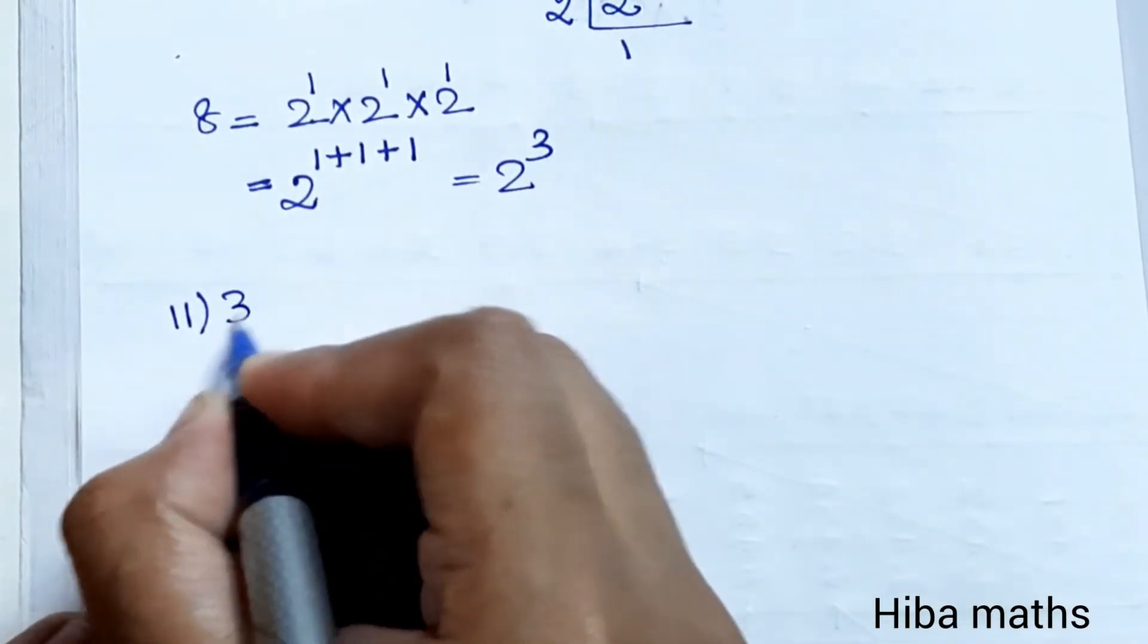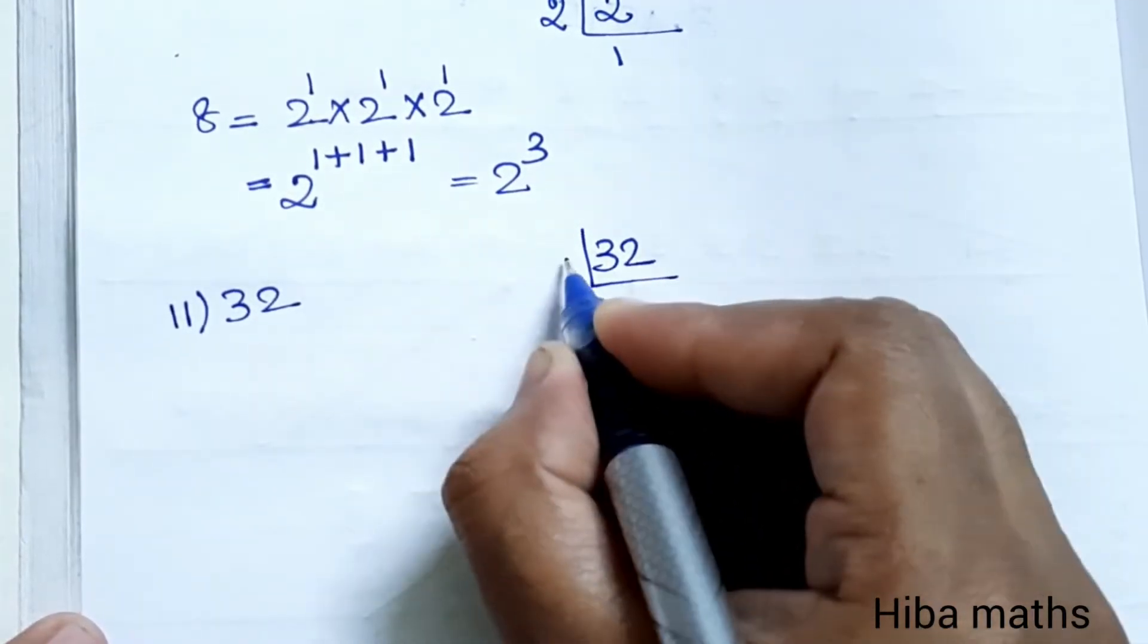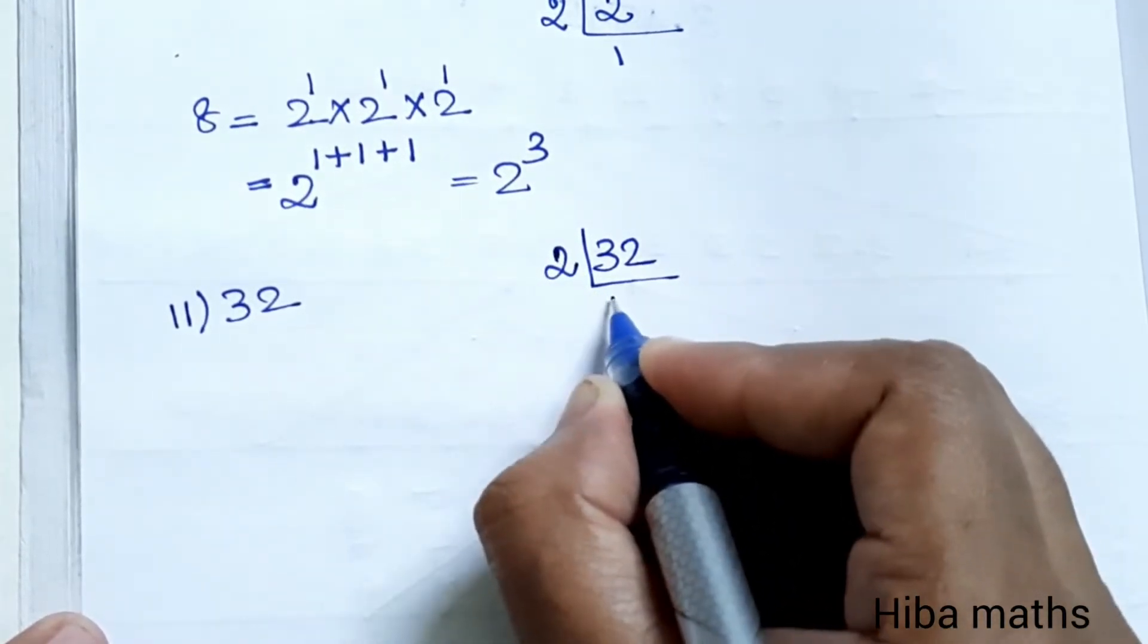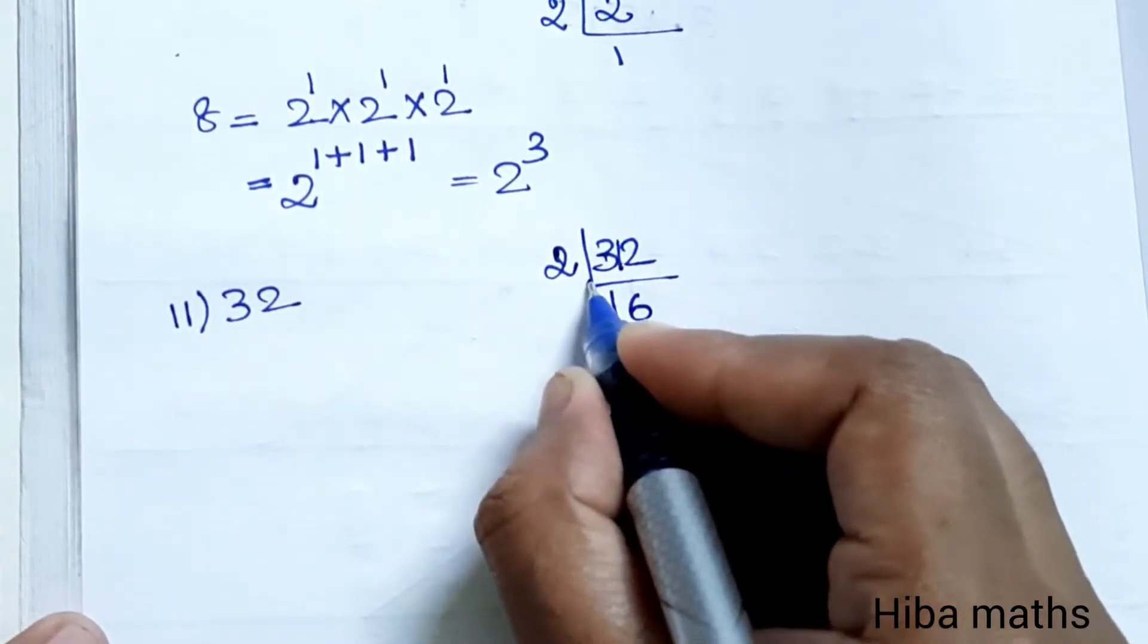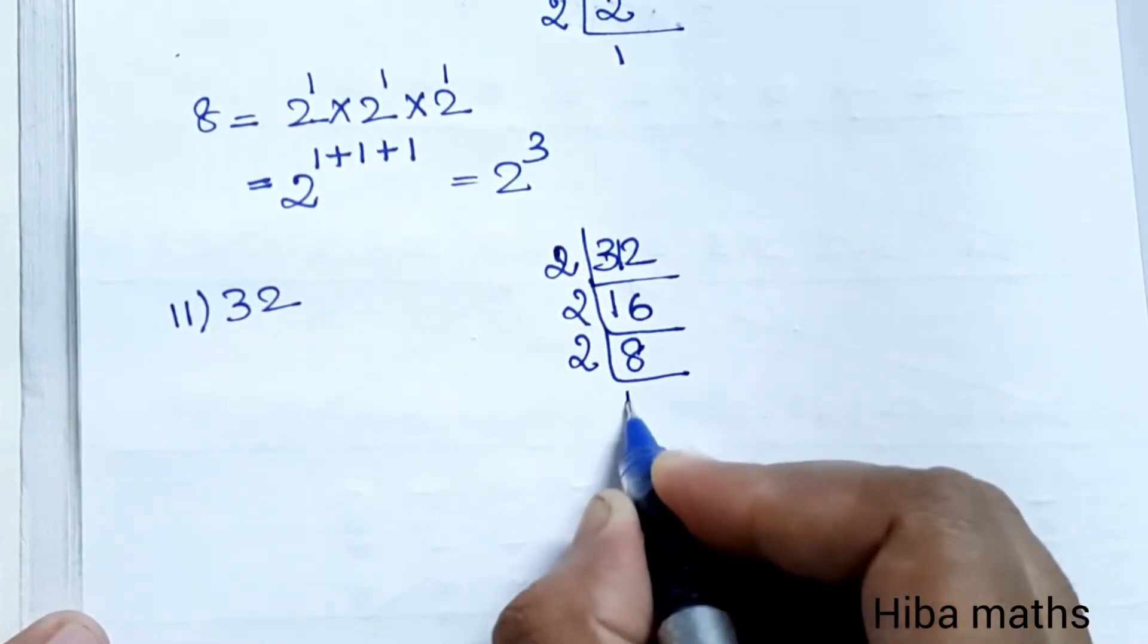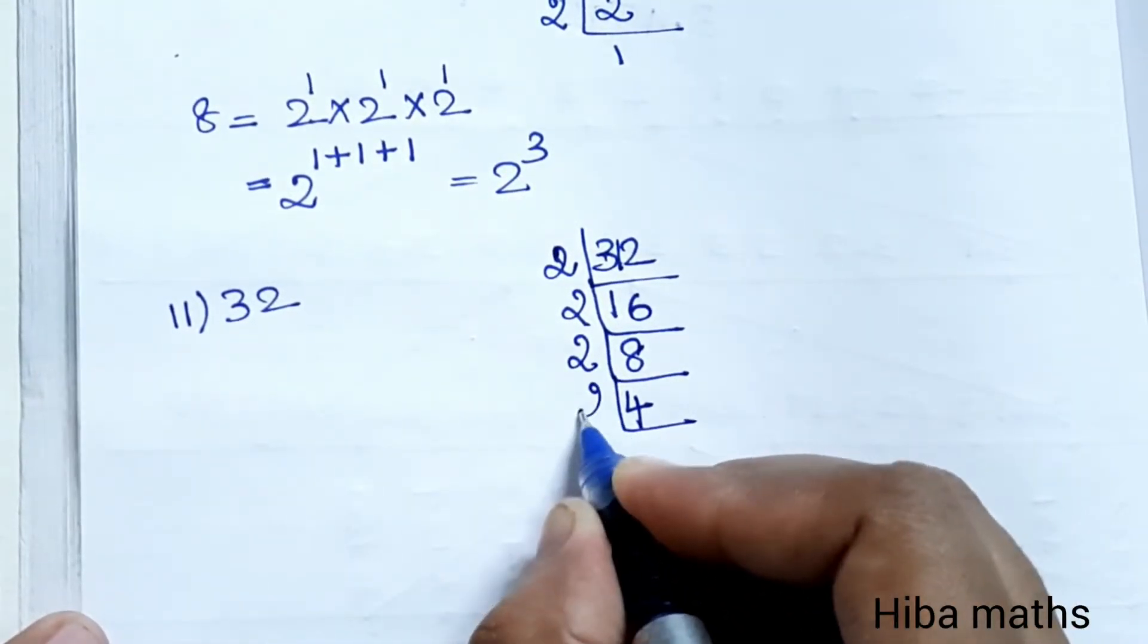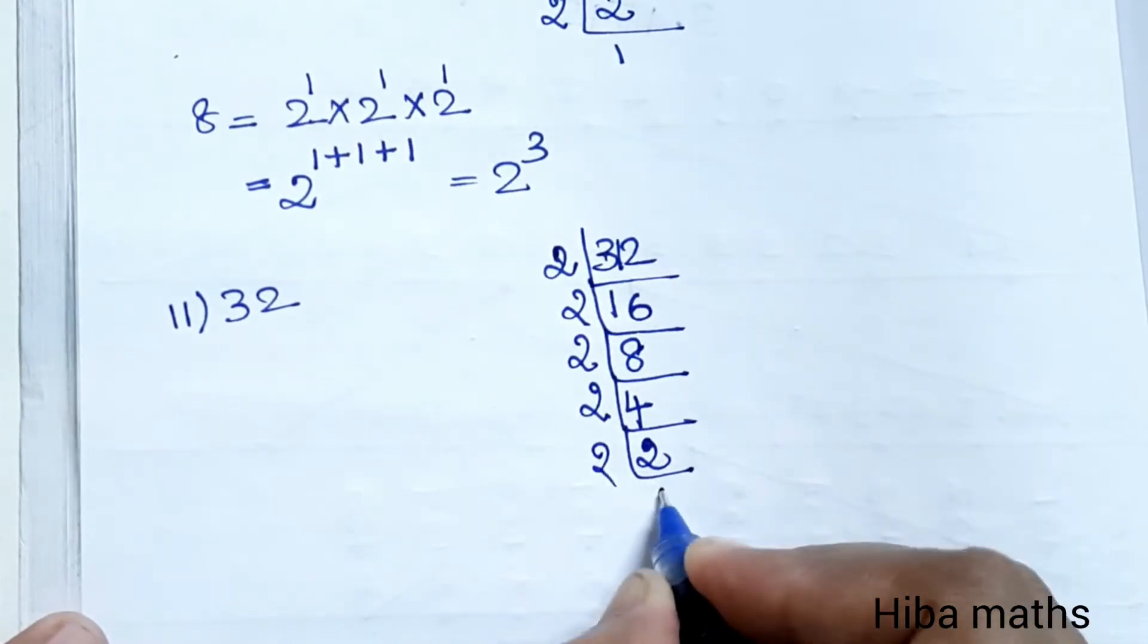Second question: 32. We do prime factorization, dividing by 2 repeatedly: 2 times 16 equals 32, 2 times 8 equals 16, 2 times 4 equals 8, 2 times 2 equals 4, 2 times 1 equals 2.